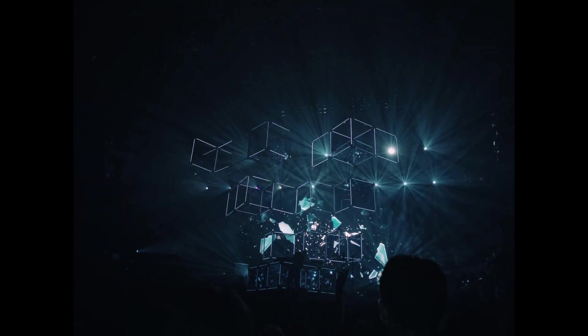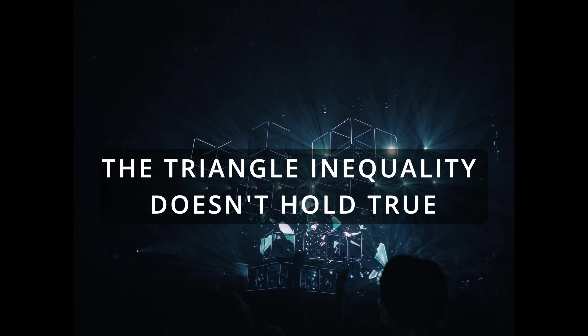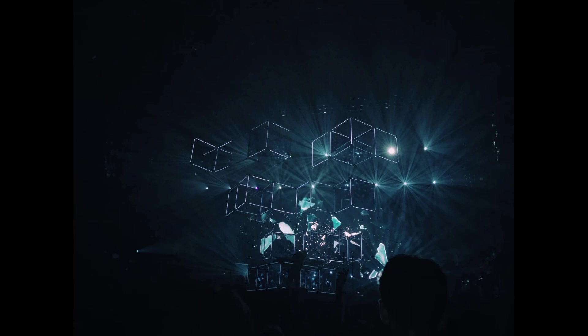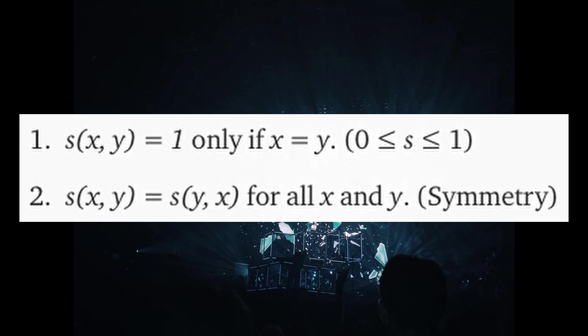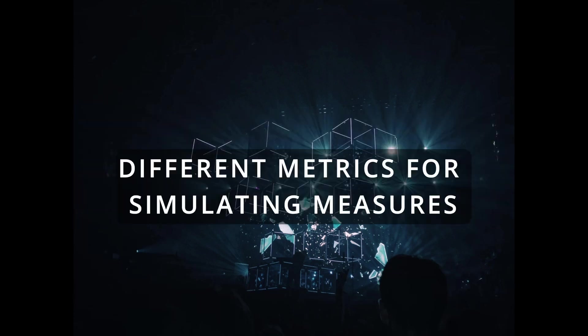So far we have talked about dissimilarity. Now let's focus on similarity between data objects. For similarity, the triangle inequality property does not usually hold, but symmetry and positivity typically do. Explicitly: similarity between x and y equals one only if x equals y, and similarity between x and y always equals similarity between y and x. There is no general analog of the triangle inequality for similarity measures.